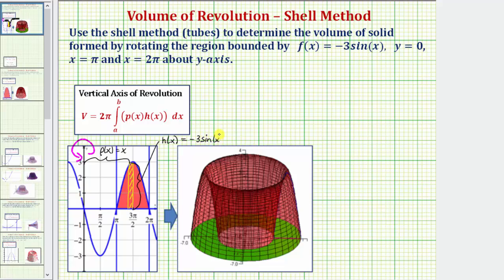This is all the information we need in order to find the volume of the solid. So the volume V is equal to two pi times the integral. The limits of integration will be from pi to two pi, and the integrated function is rho(x) times h(x), which is x times negative three sine x, integrated with respect to x, so we have dx. Let's go ahead and factor out the negative three and write this as negative six pi times the integral from pi to two pi of x sine x. Let's evaluate this on the next slide.